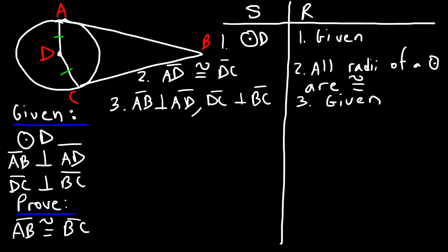Anytime you have two perpendicular segments, you need to know that they form right angles. So in step four, we could say that angle A and angle C are right angles. This is the definition of perpendicular lines.